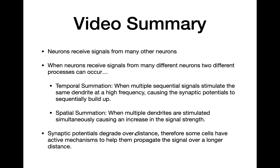In summary, neurons receive many signals from many neurons and can process them in two different ways. One is through temporal summation — stimulating the same dendrite multiple times at a high frequency, causing synaptic potentials to increase in strength with each stimulus. The second is spatial summation — stimulating multiple dendrites at the same time, causing an increase in signal strength. Lastly, synaptic potentials degrade over distance, so some cells have active mechanisms to help propagate the signal over a longer distance.